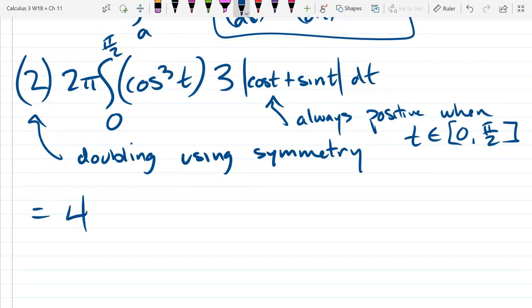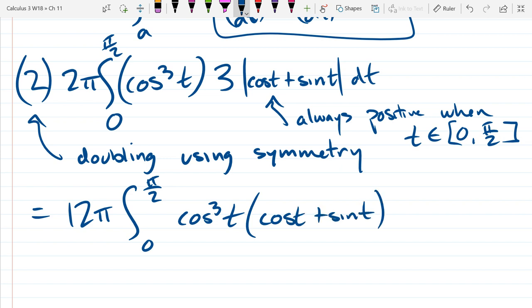So this is always positive when t is between 0 and π/2. So our surface area will now be 4 times 3 is 12. 12π, 0, π/2. So we just have cos³t. The absolute value just turns into multiplication now.